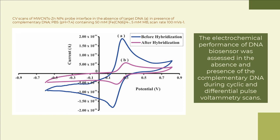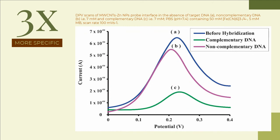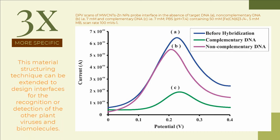The electrochemical performance of the DNA biosensor was assessed in the absence and presence of complementary DNA during cyclic and differential pulse voltammetry scans. Target binding events occurring on the interface surface patterned with single-stranded DNA were quantitatively translated into electrochemical signals due to the hybridization process. In the presence of complementary target DNA, as the result of duplex formation, there was a decrease in peak current from 1.89 × 10⁻⁴ to 5.84 × 10⁻⁵ ampere. The specificity of this electrochemical DNA biosensor was found to be three times that of non-complementary DNA. This material structuring technique can be extended to design interfaces for the recognition or detection of other plant viruses and biomolecules.